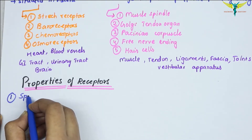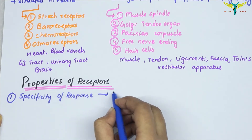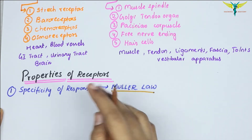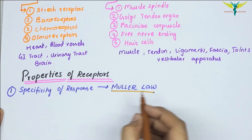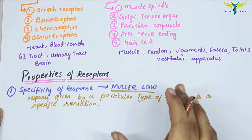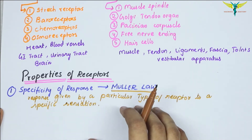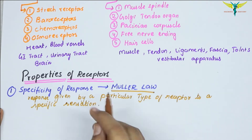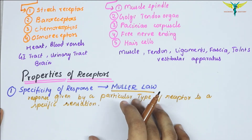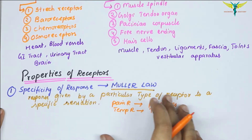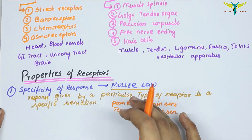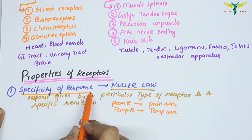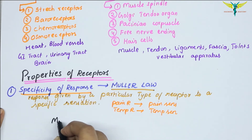The first property of receptors is the specificity of response, that is Muller's Law. Muller's Law refers to the response given by a particular type of receptor to a particular sensation. For example, pain receptors give response only to pain sensation, and temperature receptors give response only to temperature sensation. Each type of sensation also depends upon the part of the brain in which the fibers terminate. This specificity of response is also called Muller's Doctrine of Specific Nerve Energies.